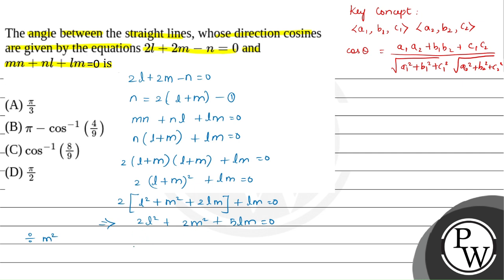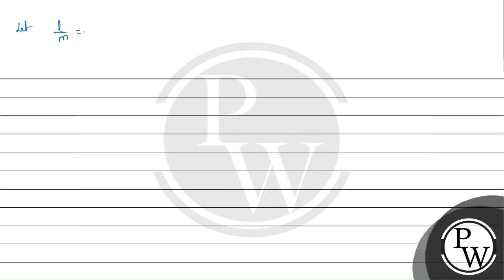Dividing by M² on both sides gives 2(L/M)² + 5(L/M) + 2 equals 0. Let us take L/M equals t, so we have 2t² + 5t + 2 equals 0.